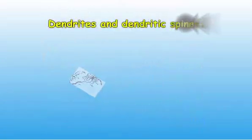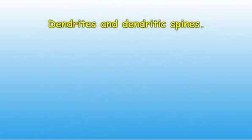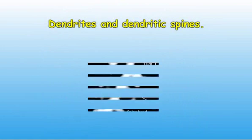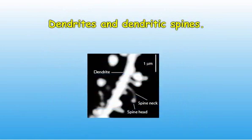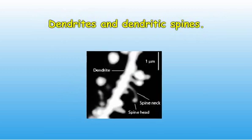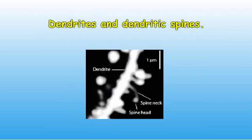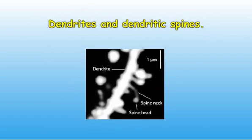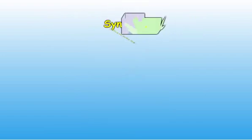Dendrites are fibers which receive information from other neurons. The dendrites are tree-shaped — dendron means tree in ancient Greek. Dendrites have protuberances on their surface called dendritic spines, rather like leaves on a tree. Dendritic spines have receptors or synapses on their surface. Synapse means connection in ancient Greek.